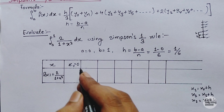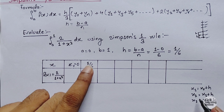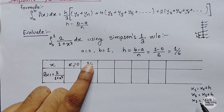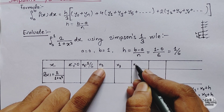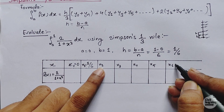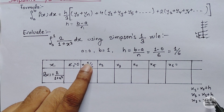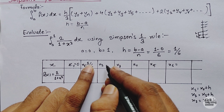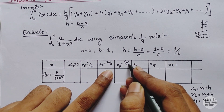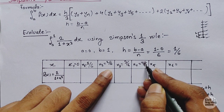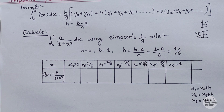x1 equals 0 plus 1/6, so x1 equals 1/6. Then x2 equals 1/6 plus 1/6 equals 2/6. Similarly x3 equals 3/6, x4 equals 4/6, x5 equals 5/6, and x6 equals 6/6 which equals 1.